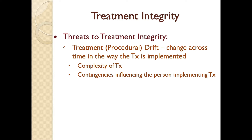One threat to treatment integrity is procedural drift, similar to drift in inter-observer agreement but in how a procedure is implemented. For example, if you're targeting self-injurious behavior such as headbanging and self-scratching, and the individual does not earn a token for engaging in those targets, the implementer might incorrectly apply the contingency to another behavior like self-biting. We have to stick to a written protocol.